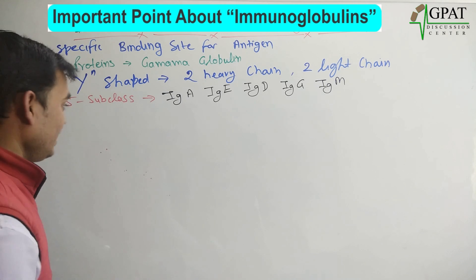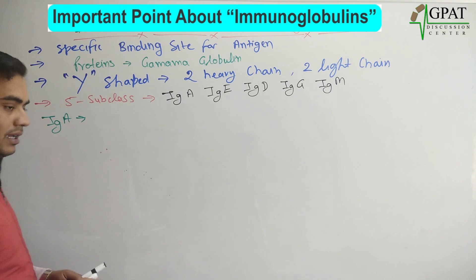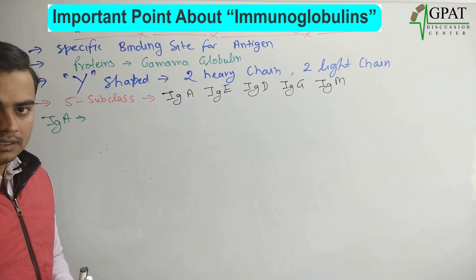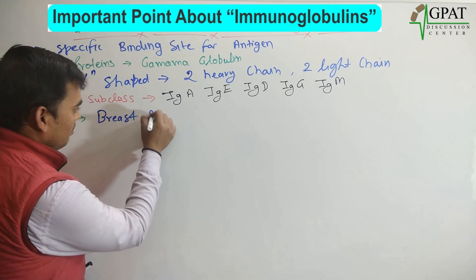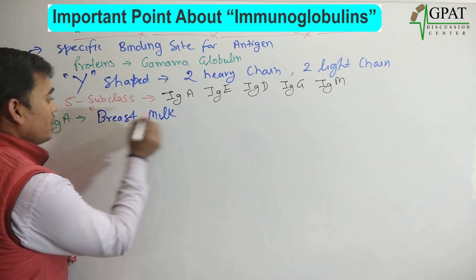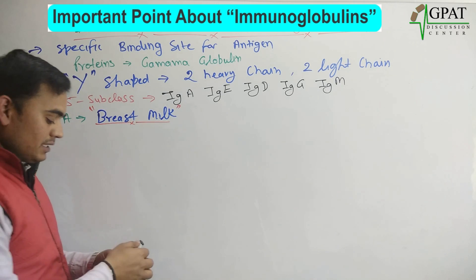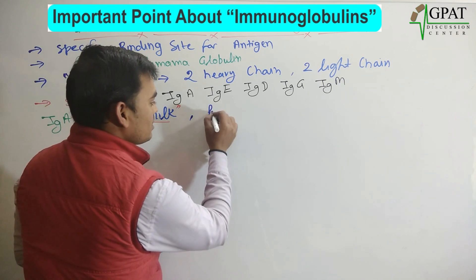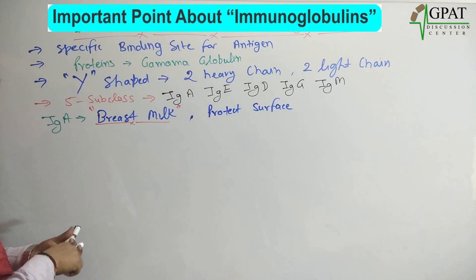Firstly, we will take IgA. IgA are the immunoglobulins that protect the surface. IgA immunoglobulins are mainly present in breast milk — make sure this point is very important. A number of times the question asks which immunoglobulins are present in breast milk. So IgA immunoglobulins are present in breast milk and they protect the surface.